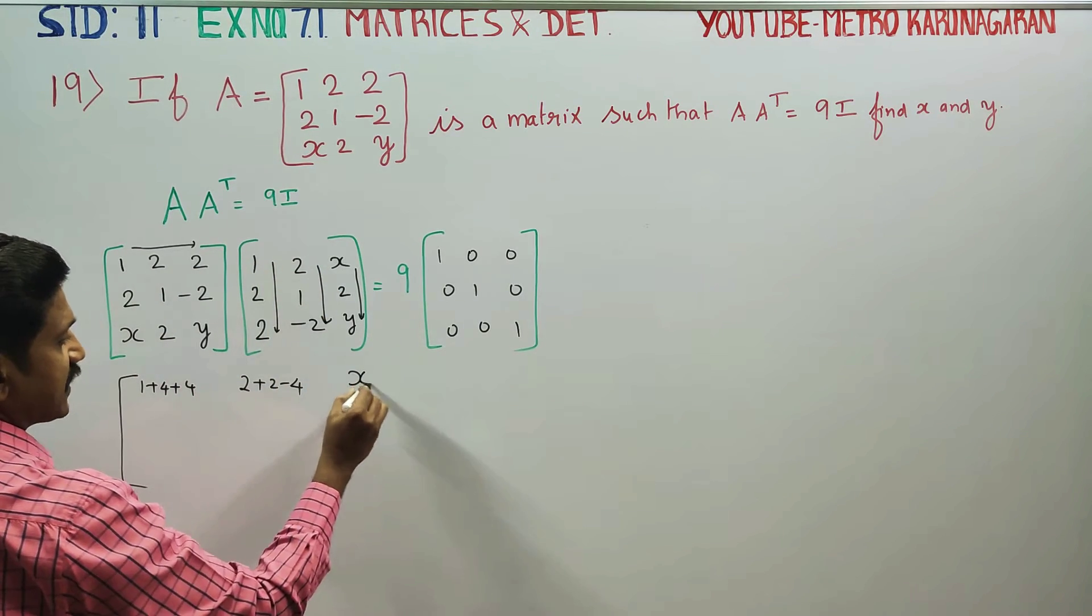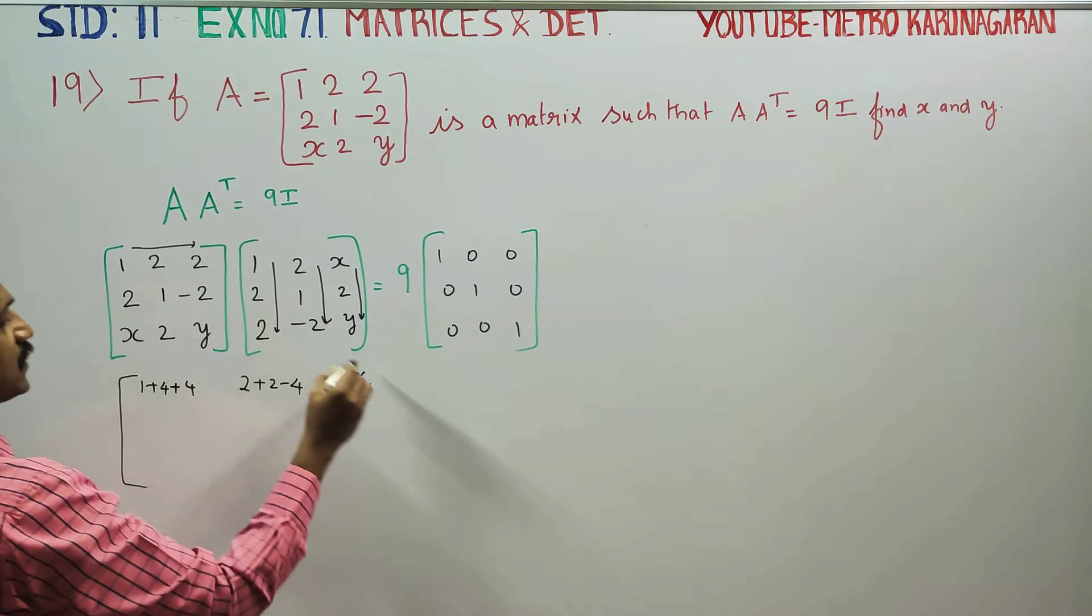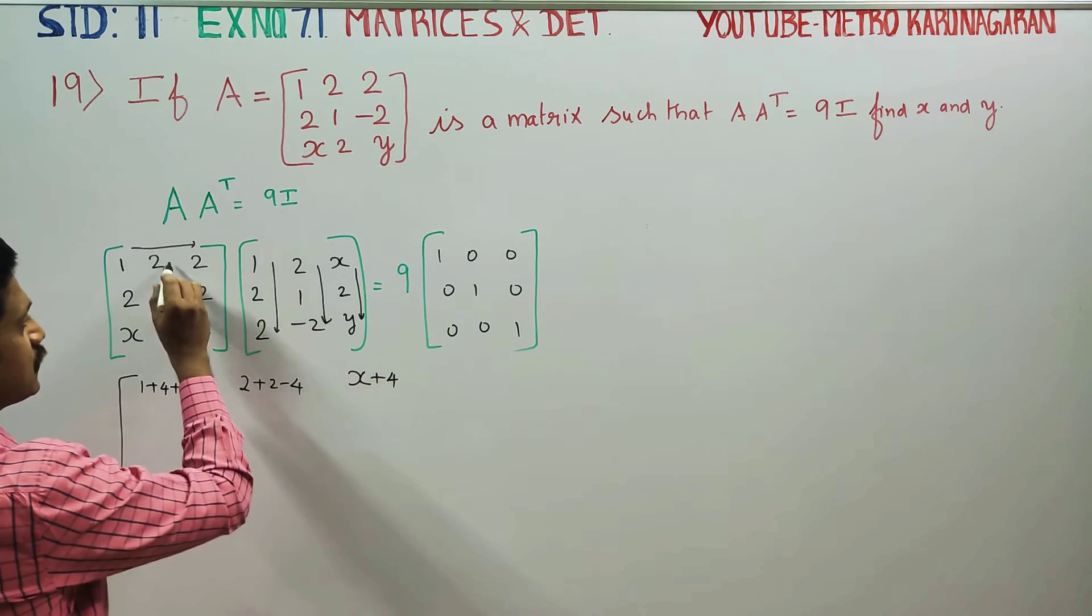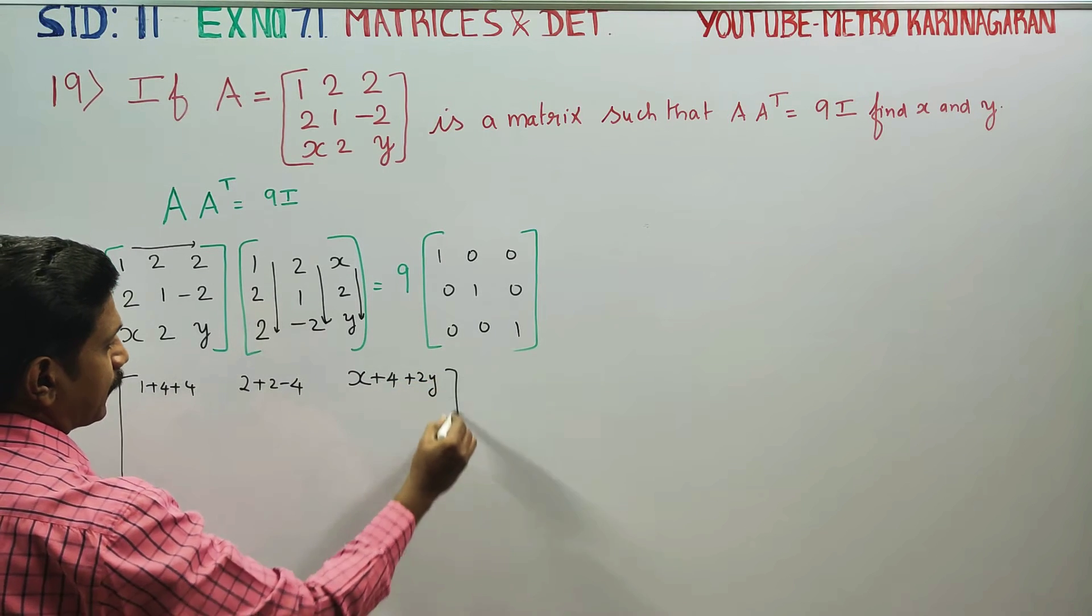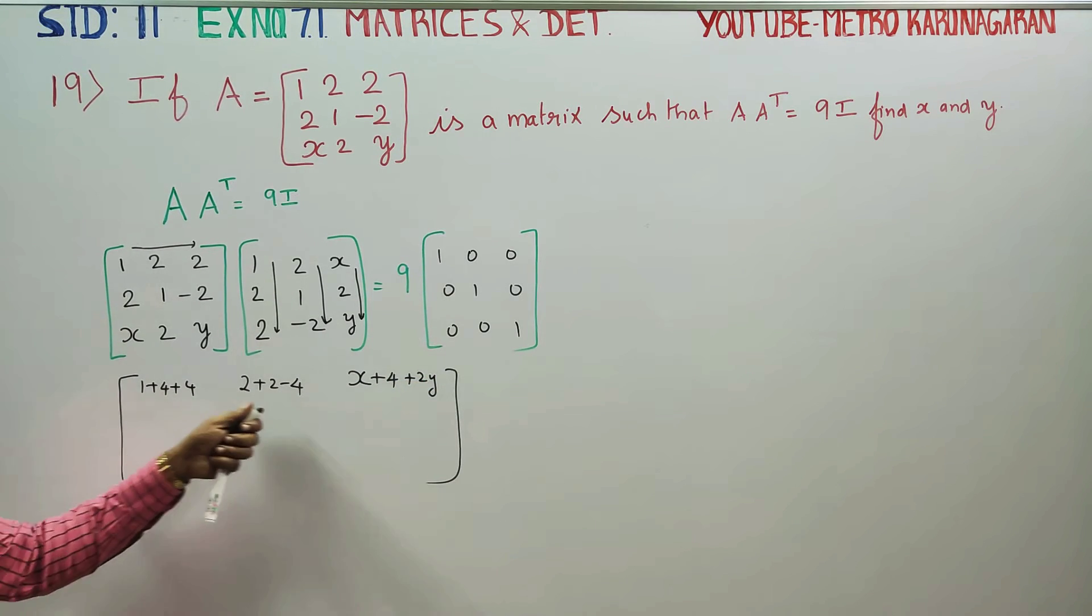So, 1 into x is x plus 2 times 2 is 4 plus 2y. It is 9 and it is 0.